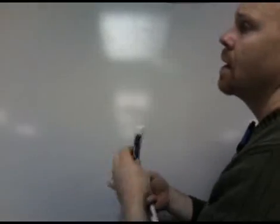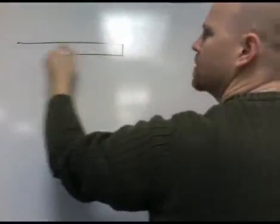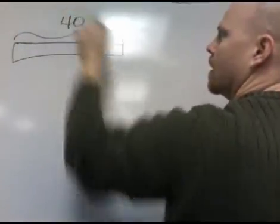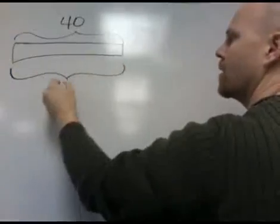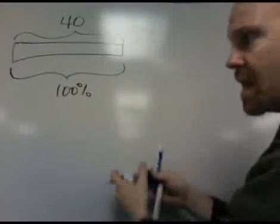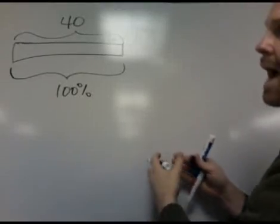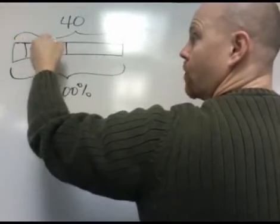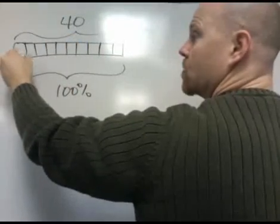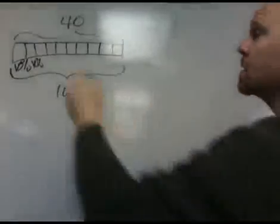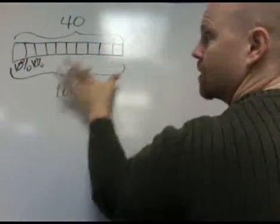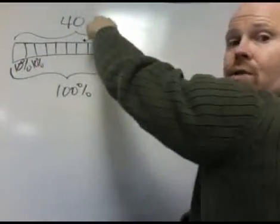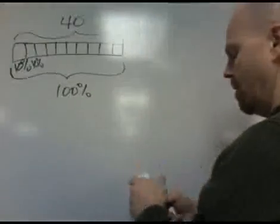There are lots of ways to solve this problem. One way is to use logic: if we have 40 students in the bus, that's 100%. We can cut that 100 up into 10 little pieces — 1, 2, 3, 4, 5, 6, 7, 8, 9, 10 — so each one of these pieces is 10%. If we take 40 and cut it up into 10, we get 4.